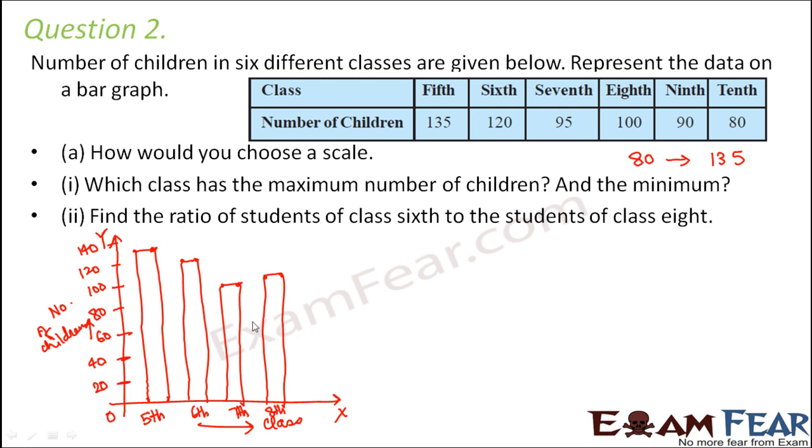For class 9th, it is 90. So 90 would be somewhere exactly in between 80 and 100, somewhere here. This would be class 9th. And finally, class 10th is 80. So 80 is here. This would be class 10th. This is how we have drawn the bar graph for this data.